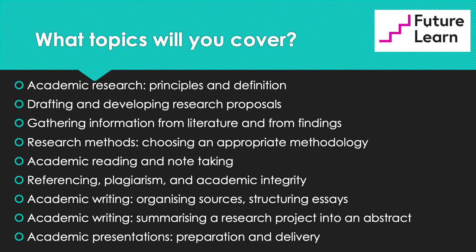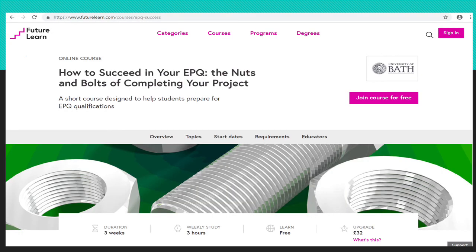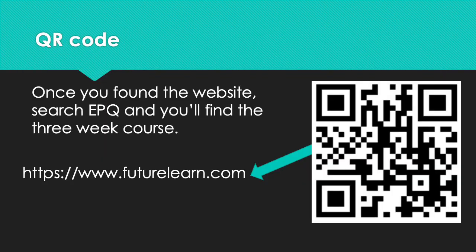The course also covers summarising research projects into an abstract — that's less important for your EPQ but you may wish to do it anyway — and academic presentations, both preparation and delivery. Next time I see you, we will be looking at precisely that: academic presentations and how to present and plan those. This course is entirely free. All you need to do is go to futurelearn.com. You can take out your camera and this QR code will take you straight there. Go to the search function at the top, type in EPQ, and you'll find that exact course.